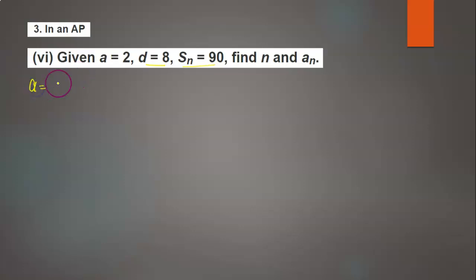a is the first term, which is given as 2. d is the common difference, which is 8, and the sum of n terms is 90. We need to find n and an.